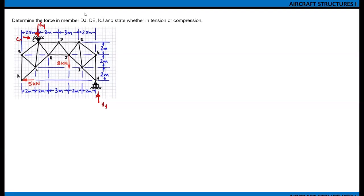So our formula is m equals 2j minus r. And how many members do we have? 1, 2, 3, 4, 5, 6, 7, 8, 9, 10, 11, 12, 13, 14, 15, 16, 17, 18, and 19. So we have 19 members equals 2 times how many joints.